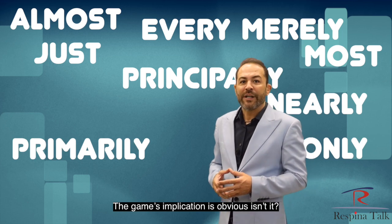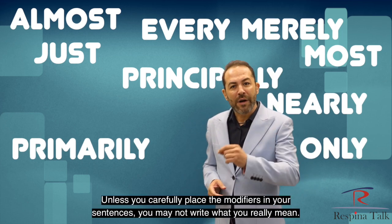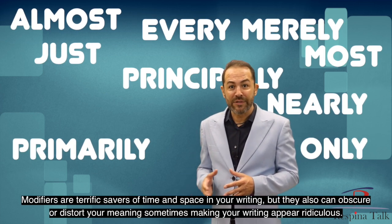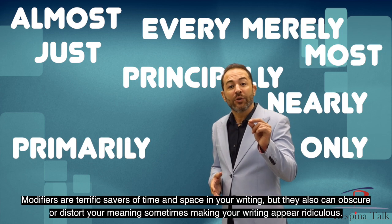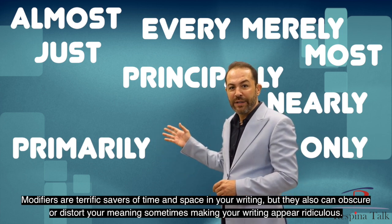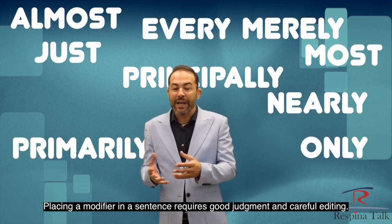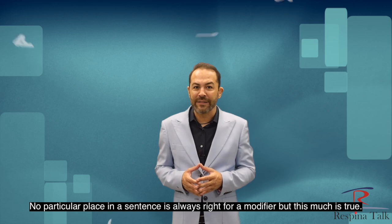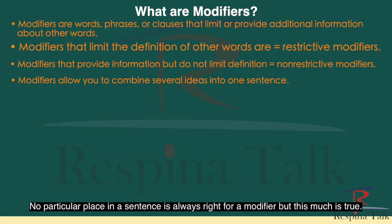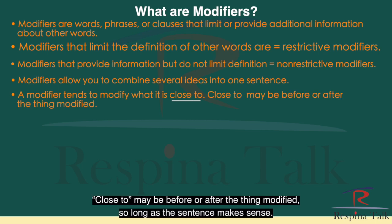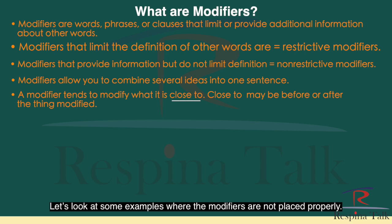The implication is obvious: unless you carefully place modifiers in your sentences, you may not write what you really mean. Modifiers are terrific savers of time and space in your writing, but they can also obscure or distort your meaning, sometimes making your writing appear ridiculous. Placing a modifier in a sentence requires good judgment and careful editing. No particular place is always right for a modifier, but a modifier tends to modify what it is close to — before or after the thing modified, so long as the sentence makes sense.